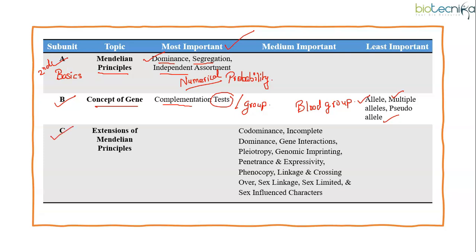Coming to subunit C, which is about extensions of Mendelian principles. Here, you study terms like co-dominance, incomplete dominance, epistasis, genomic imprinting, phenocopy, penetrance and expressivity, sex limited, sex influenced characters and many more. Direct questions on any particular term usually in part B or in combination with other topics like pedigree analysis are asked from here.